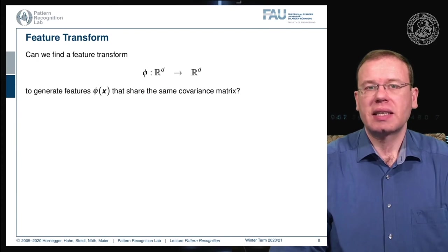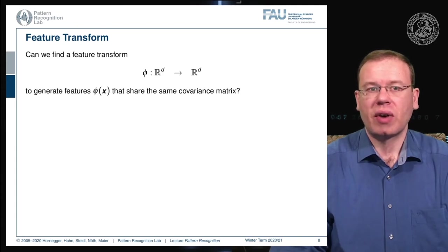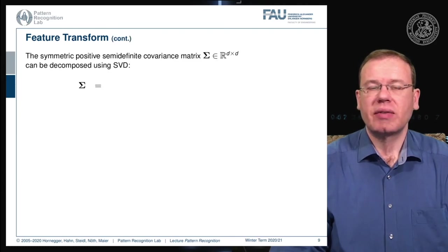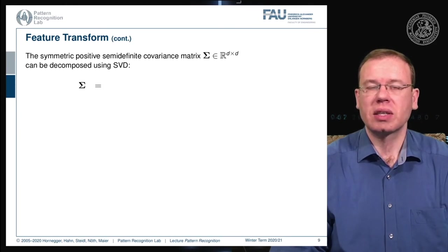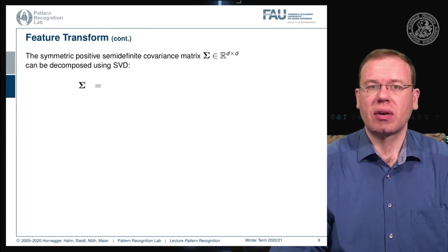Now let's think about the implications for feature transforms. The question we want to ask is: can we find a feature transform phi that generates feature vectors from x such that all classes share the same covariance matrix? To explore this, we apply the singular value decomposition, a very useful tool for all matrices. If you are unfamiliar with SVD, I strongly recommend reviewing it, as we will use its properties extensively.